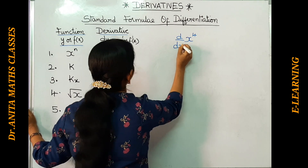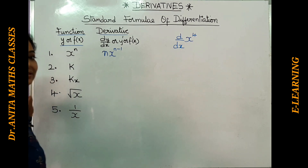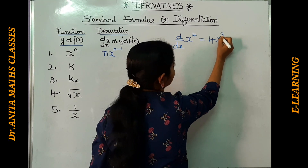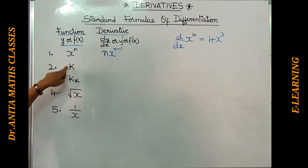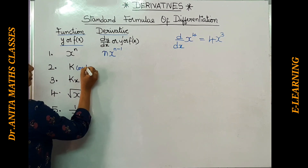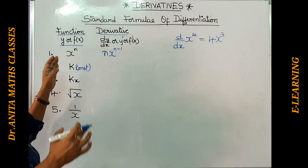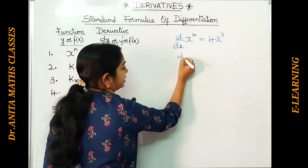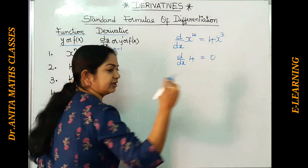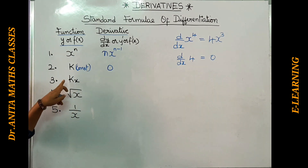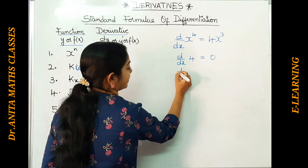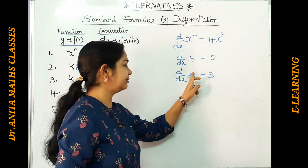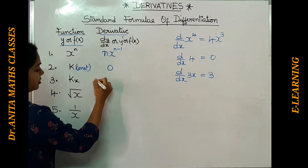The derivative of a constant k is always 0. For example, d/dx of 4 equals 0. For the function kx — a constant times x — the constant comes out and d/dx of x is just 1, so the derivative is simply k, the constant.